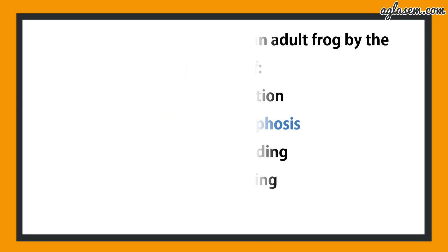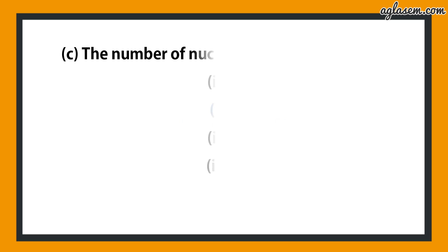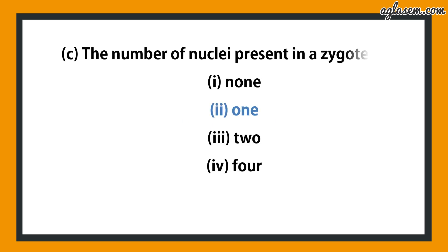Third part: the number of nuclei present in a zygote. Options are: 1) none, 2) one, 3) two, 4) four. The answer is the second option, that is one.